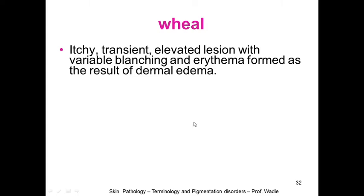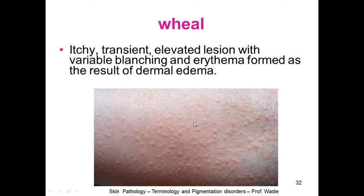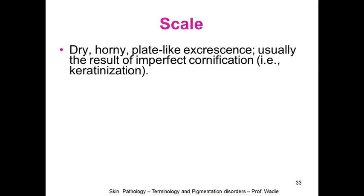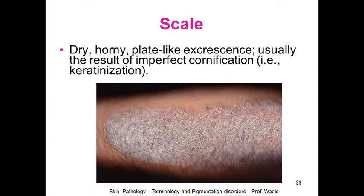A wheal is an itchy, transient elevated lesion with variable blanching and erythema, formed as the result of dermal edema. It is not permanent — it comes and goes, maybe for hours or a few days. Erythema means redness. A scale is a dry, horny, plate-like excrescence, usually the result of imperfect cornification — that is to say keratinization. It looks like a fish scale — dry and horny.